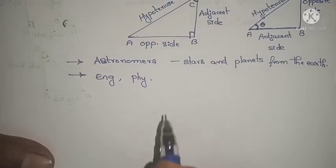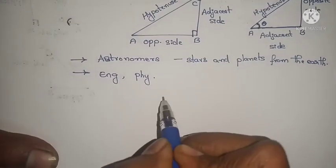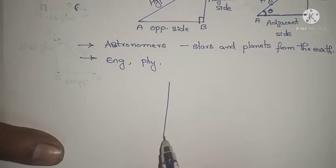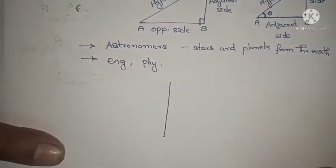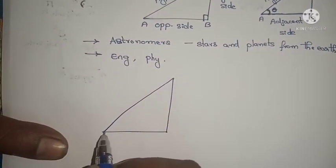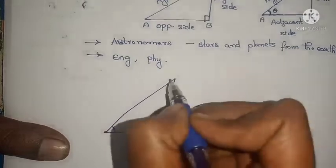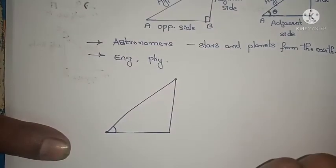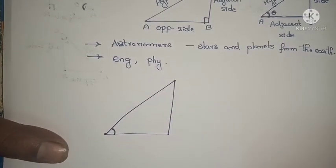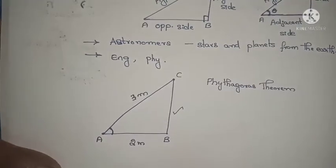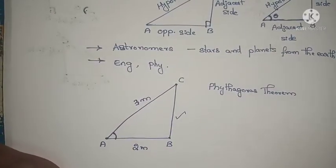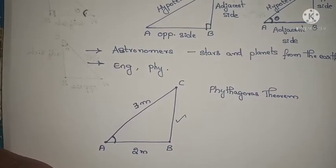Trigonometry is also useful in our daily life. For example, if there is a building and we want to find the height of the building, it is not necessary to measure directly. If I make a right angled triangle like this, and I stand here and measure the angle to the topmost point of the building, by knowing this angle I can find the height of the building. I can consider BC as the height of the building.